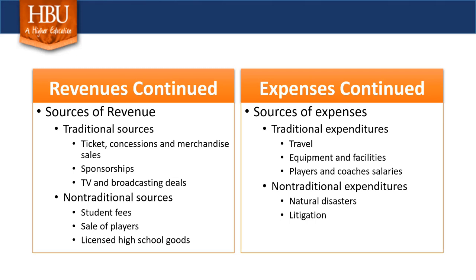Some non-traditional sources of revenue have evolved over the last decade — student fees, particularly to pay for collegiate sport, as well as student fees to help pay for high school sport. Selling players is another example, and lastly, as high school sport has become increasingly popular, we are starting to see high school sport being licensed similarly to collegiate sport.